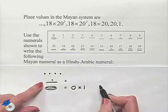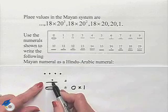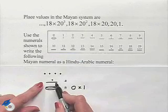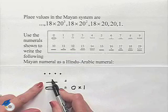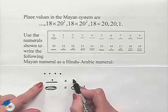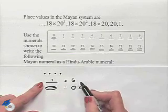First figure out what this symbol means. A bar is 5, a dot above it is 1, so this is 5 plus 1 or 6. That's going to be in our next place, which would be multiplying times 20.